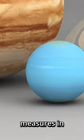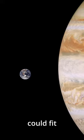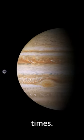But let's go bigger. Jupiter measures in at a whopping 1 quadrillion 341 trillion cubic kilometers, meaning our tiny blue marble could fit inside the Red Giant just over 1 and a quarter thousand times.